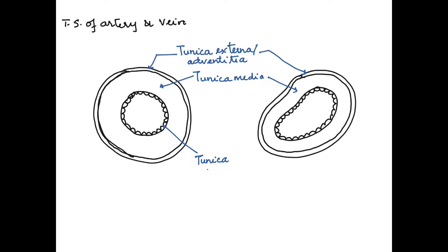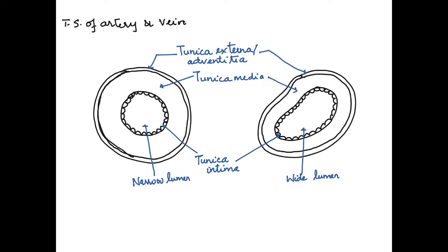The innermost layer is the tunica intima or tunica interna — this is again similar in both artery and vein. Now if you look at the lumen, the lumen in the case of the artery is narrow, and the lumen in the case of a vein is wide.